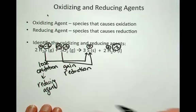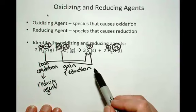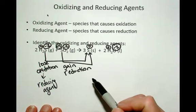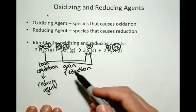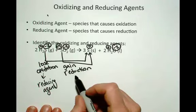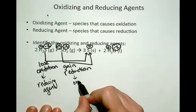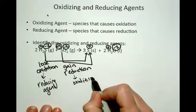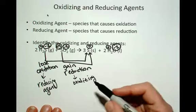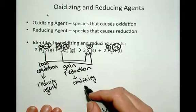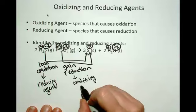It's the agent of change. So it's providing electrons such that reduction can occur. So it's the reducing agent. And then the sulfur dioxide must be the oxidizing agent, because it is accepting electrons and allowing something else to undergo oxidation.